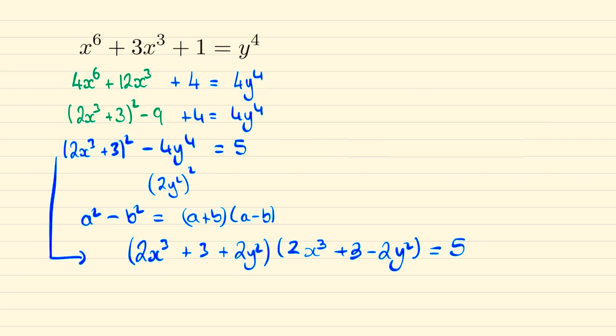This leads to four possible solutions. We could have the first bracket equals 5 when the second is 1, or the first equals 1 when the second is 5, or we could have -5 and -1, or -1 and -5.